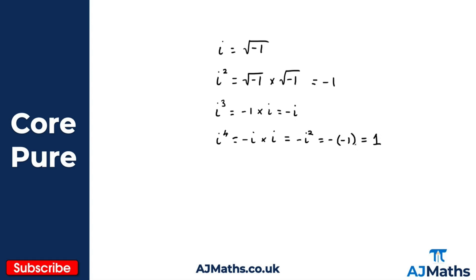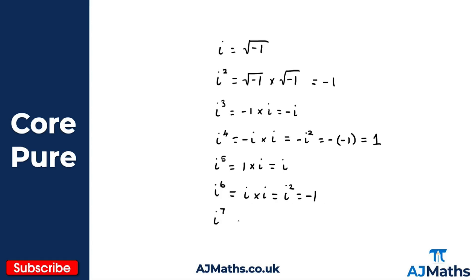So i to the four is one. For i to the five, we take i to the four times i, so one times i gives us simply i. For i to the six, we take i times i again, giving us i squared, which equals minus one. i to the seven is minus one times i, giving minus i. And i to the eight gives us one again — the same as i to the four. So we can see the cyclic pattern that emerges when working with powers of i.